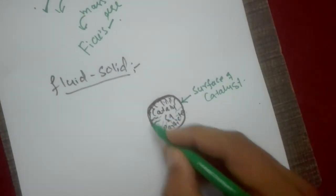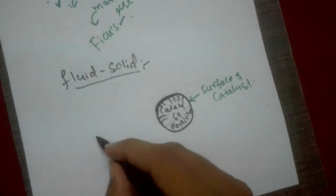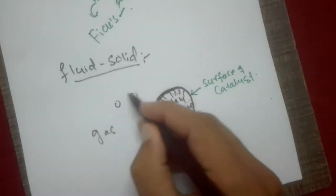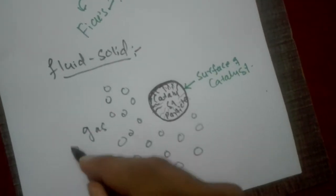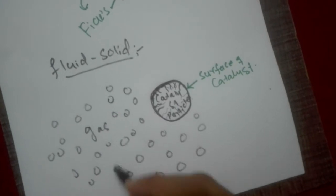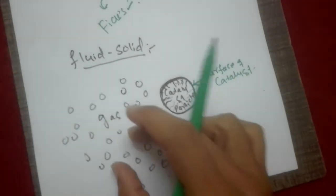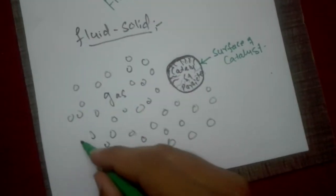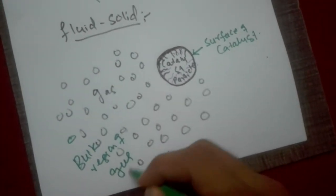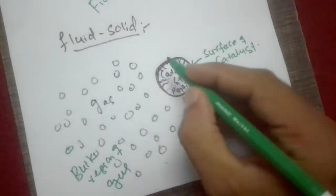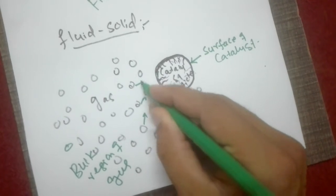Now suppose there are some gas molecules — a large number of gas molecules — and these gas molecules are transferring from the gas space to the solid space. Suppose this is the bulk region of gas, meaning there is a large number of gas molecules on this side, and they are transferring from the bulk phase toward the catalyst surface.